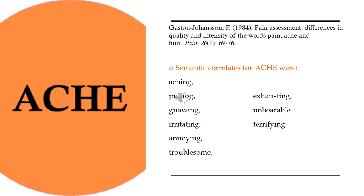Continuing with semantic correlates for ache — again, reflect on whether it's a sensory or emotional experience and the intensity of each word. Semantic correlates for ache are: aching, pulling, gnawing, irritating, annoying, troublesome, exhausting, unbearable, terrifying.